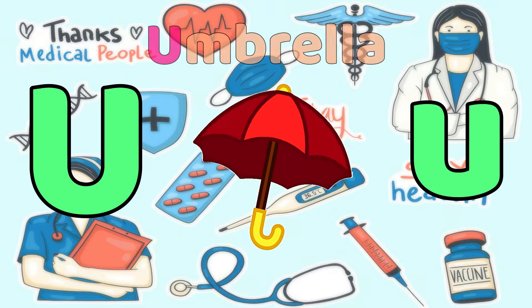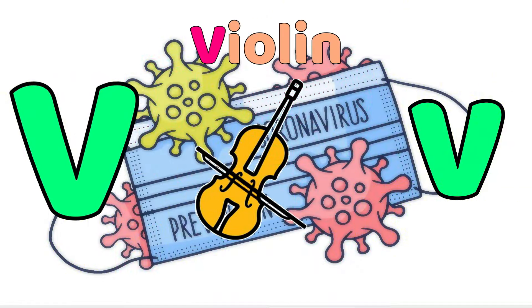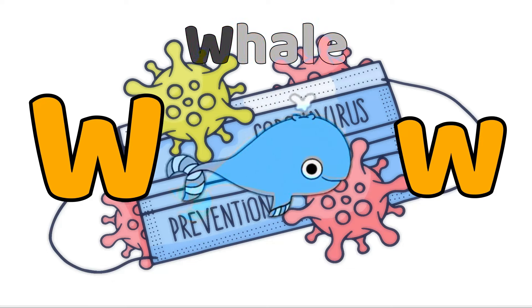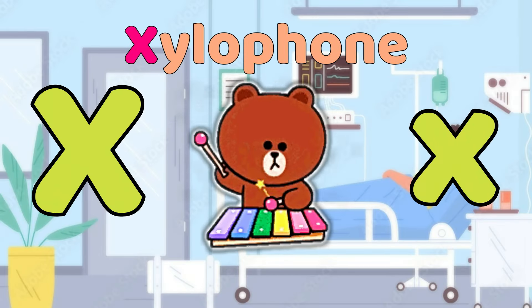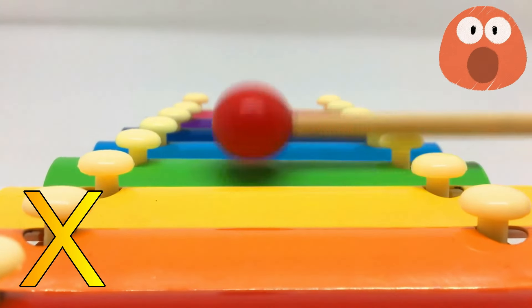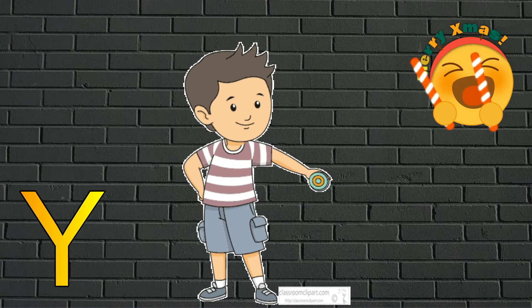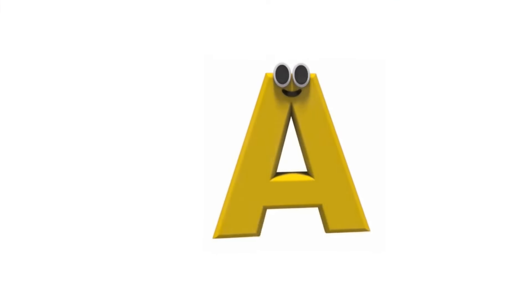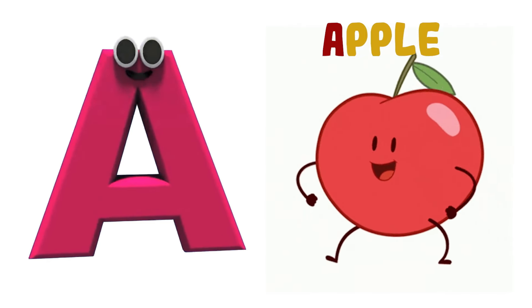U is for Umbrella, U-Umbrella. V is for Violin, V-V-Violin. W is for Whale, W-W-Whale. X is for Xylophone, X-Xylophone. Y is for Yo-Yo, Y-Y-Yo-Yo. Z is for Zebra, Z-Z-Zebra.